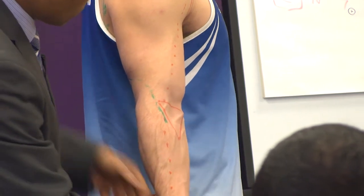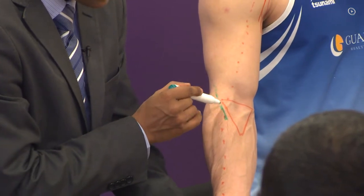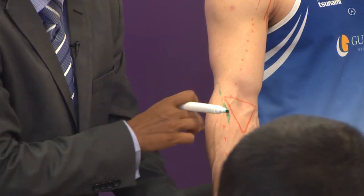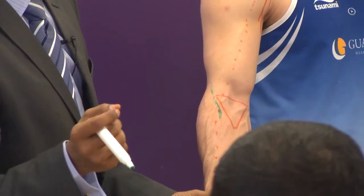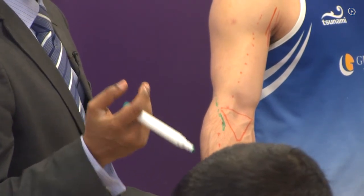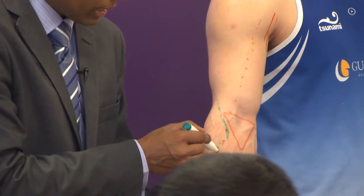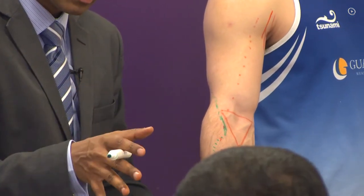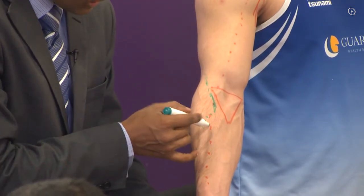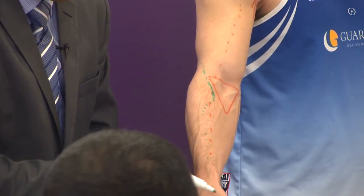About seven centimeters distal to the joint line it divides into the posterior interosseous nerve and the superficial branch of the radial nerve. The posterior interosseous nerve is a deep branch, similar to the anterior interosseous nerve which is also a deep branch. The superficial branch is the cutaneous nerve — that's what you test for sensation.